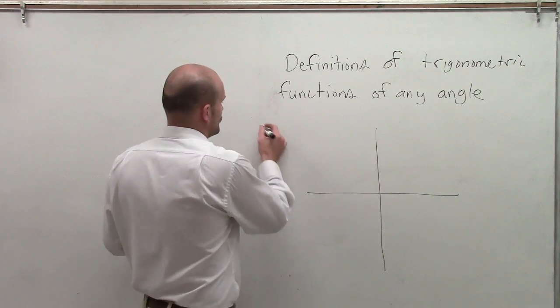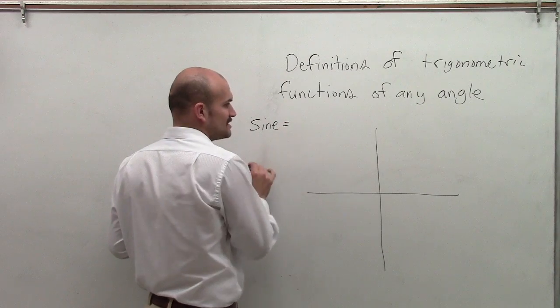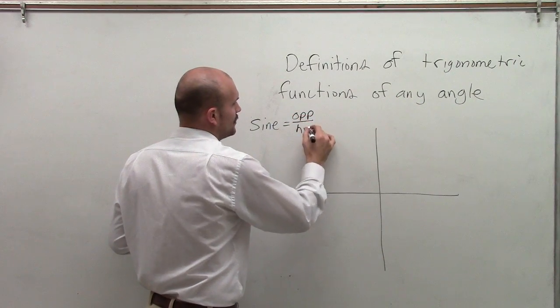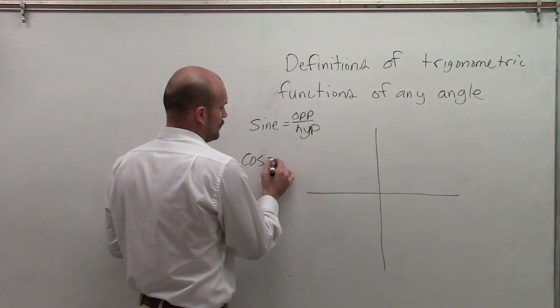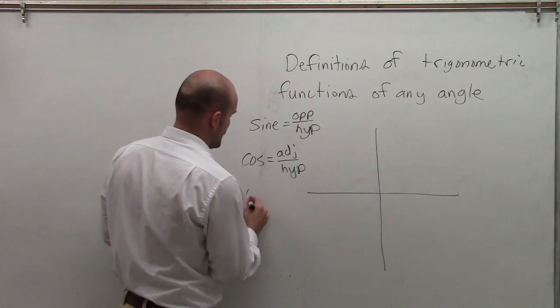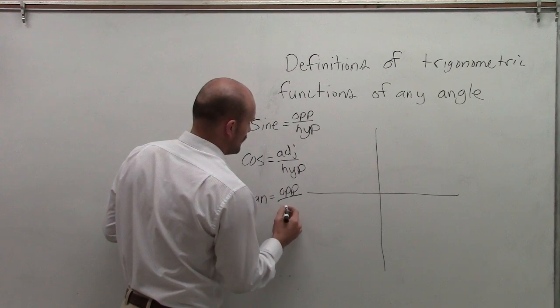Let's just go back through and remember in trigonometry, the sine function represented the opposite over the hypotenuse. The cosine represented the adjacent over the hypotenuse, and the tangent function represented the opposite over the adjacent.